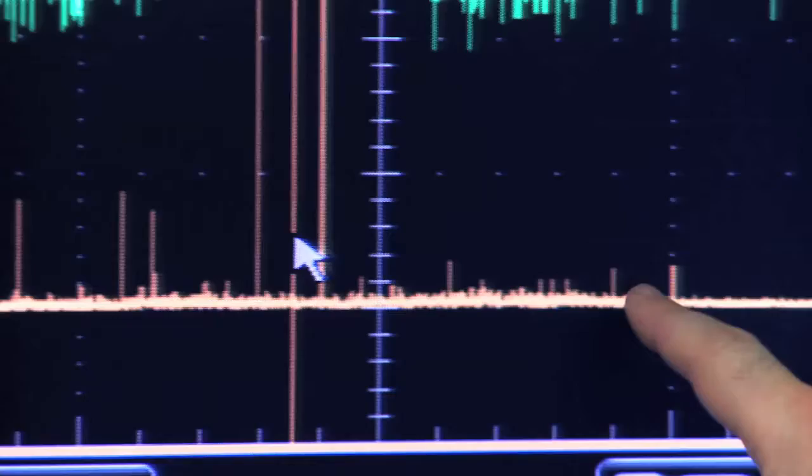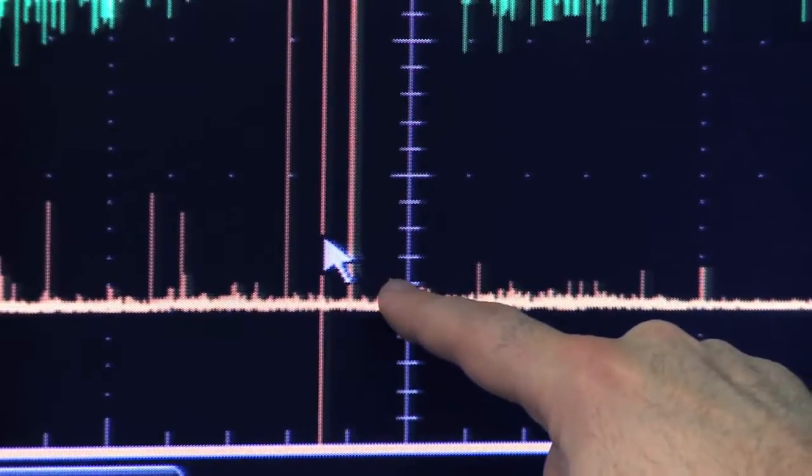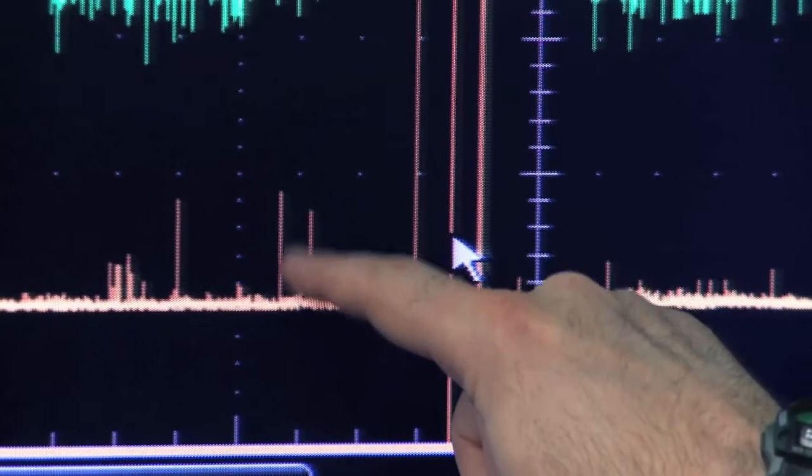After that, we take those colors and directly compare it to the data that we get from space to see if those molecules are actually present in space.